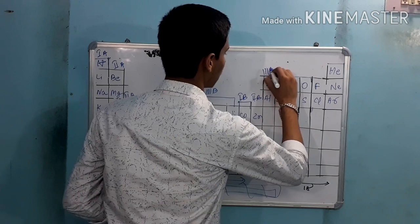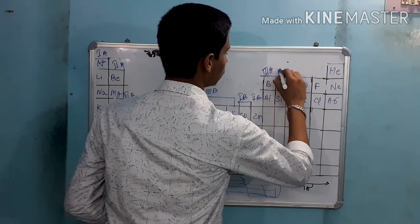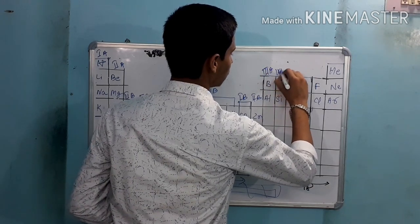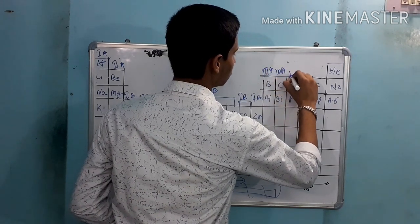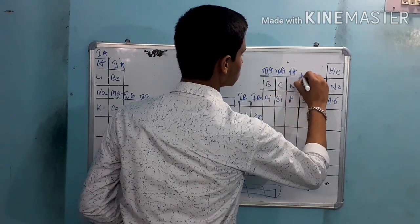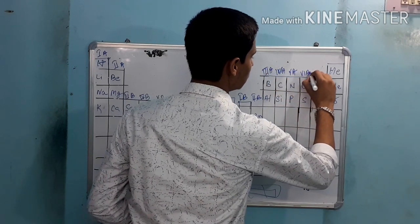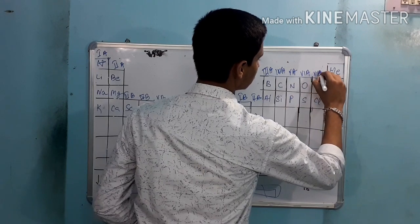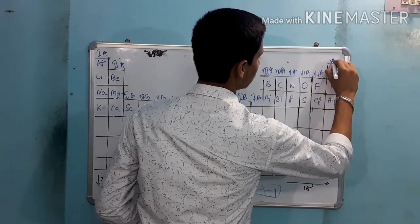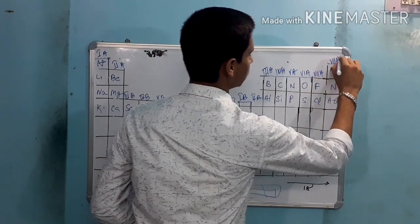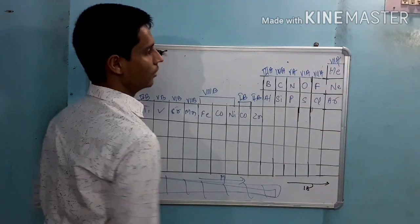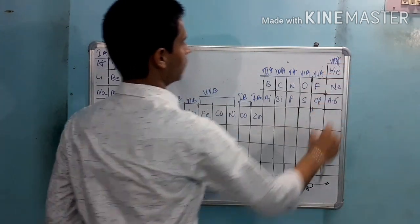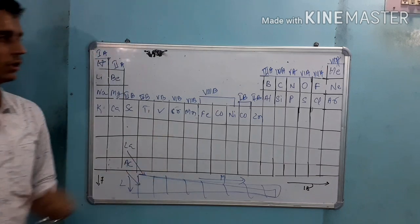Then: 3rd A, 4th A, 5th A, 6th A, 7th A, 8th A — completing 40 elements in the periodic table.